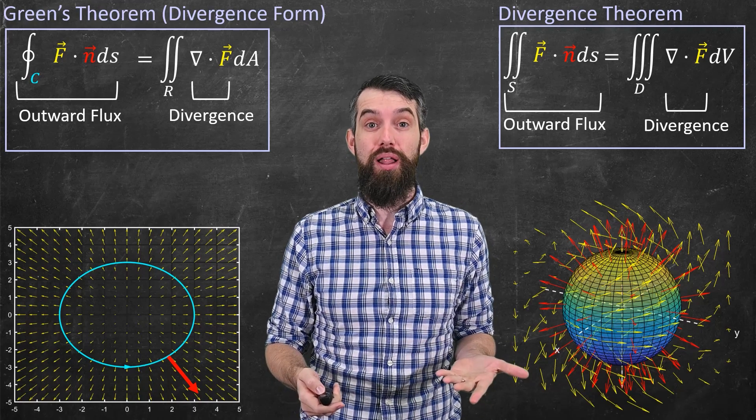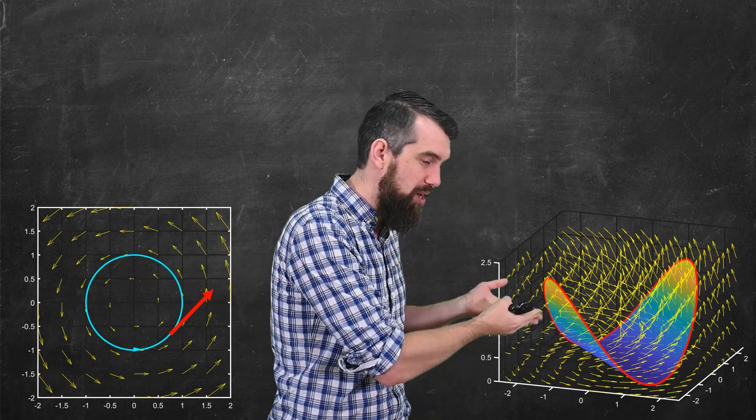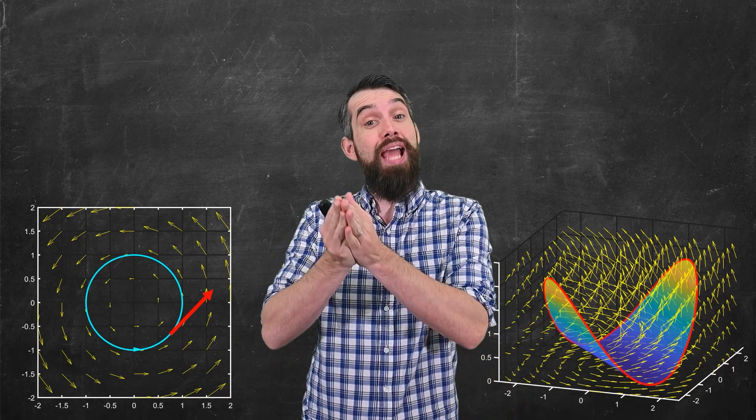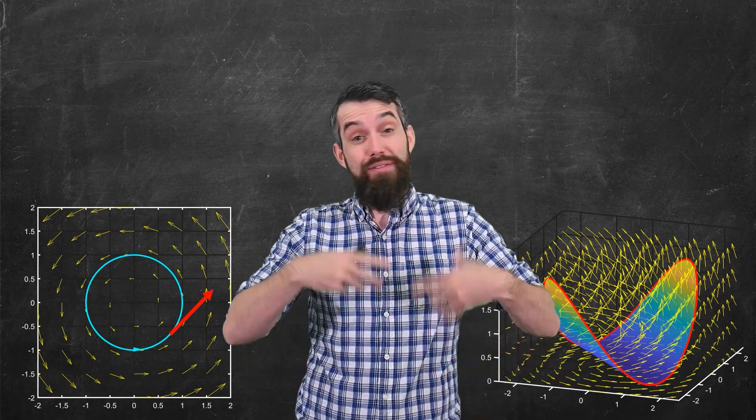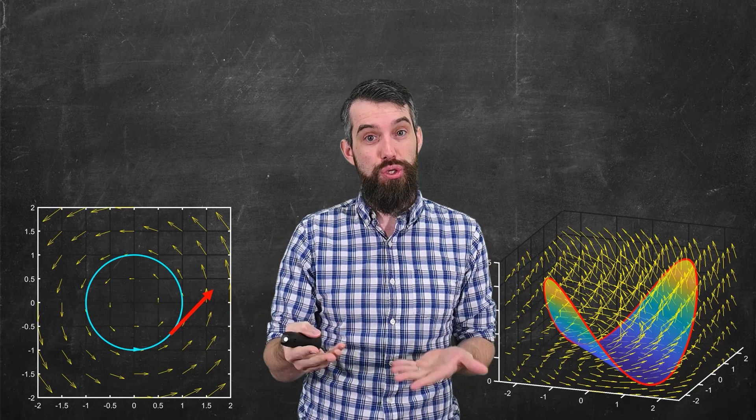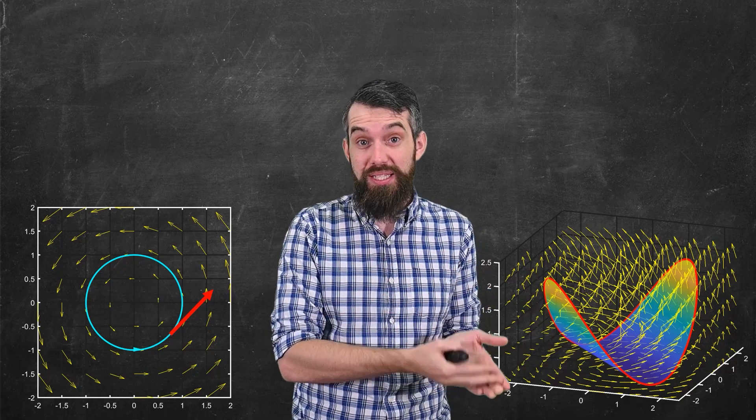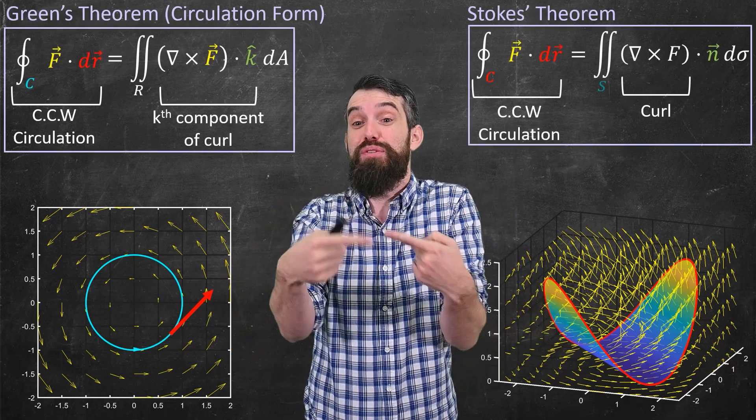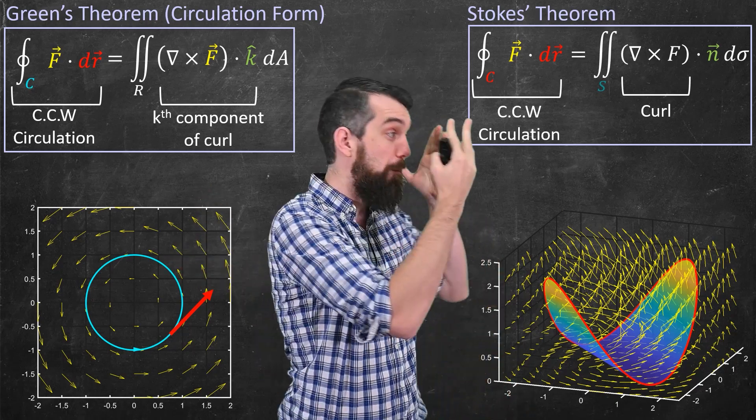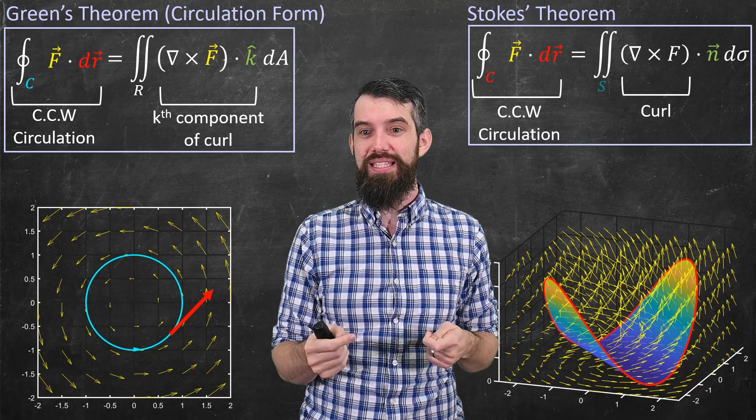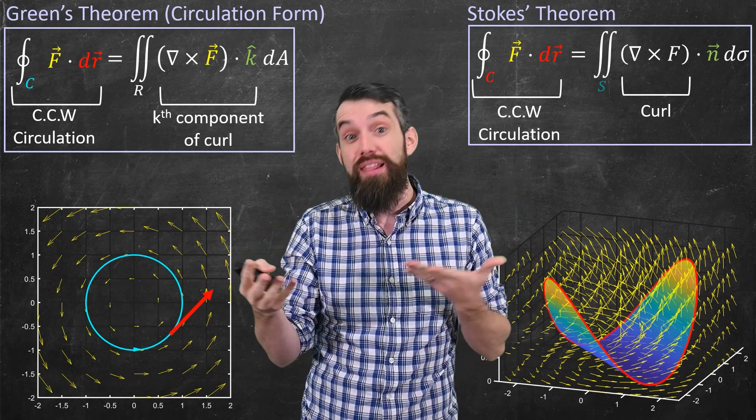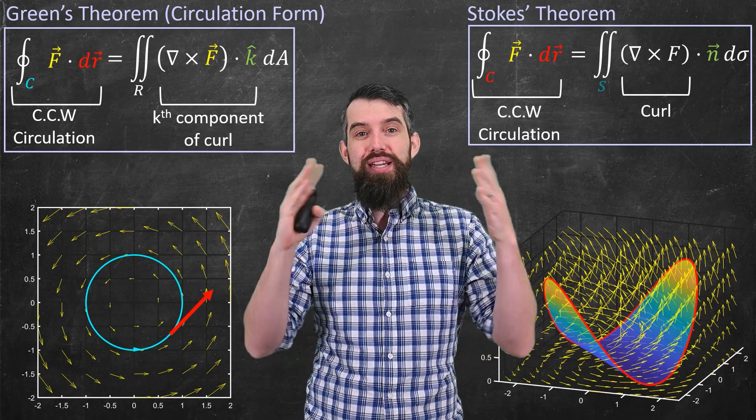We have a similar story with the curl. We have a two-dimensional case and a three-dimensional case. In the case of the curve, we're now trying to measure the circulation, which is the tendency for the vector field to be aligned with the tangent vectors. Similarly, in three dimensions, you could have a surface that has a boundary curve. We're asking, what is the tendency for the vector field to be aligned with the tangent vectors to that boundary curve?